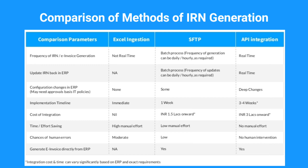When it comes to time taken or efforts saved: there is high manual effort involved in Excel ingestion, low manual effort involved in SFTP, and no manual effort involved in API integration. The chances of human errors are moderate in Excel ingestion, too low in SFTP-based integration, and there is no human intervention in API integration. When it comes to generating invoices directly from the ERP system, it is not available for Excel-based ingestion, but is available for both SFTP-based integration and API integration.